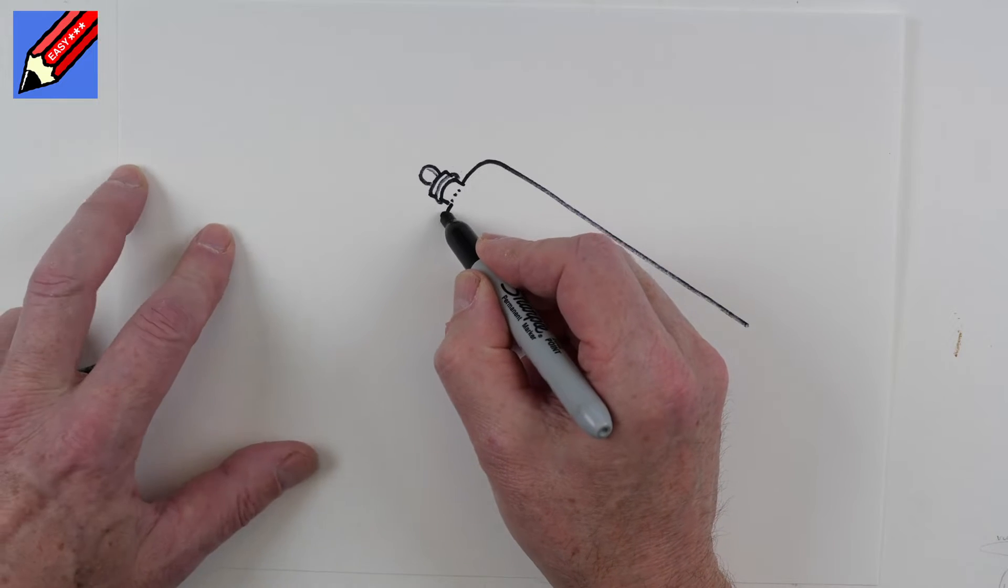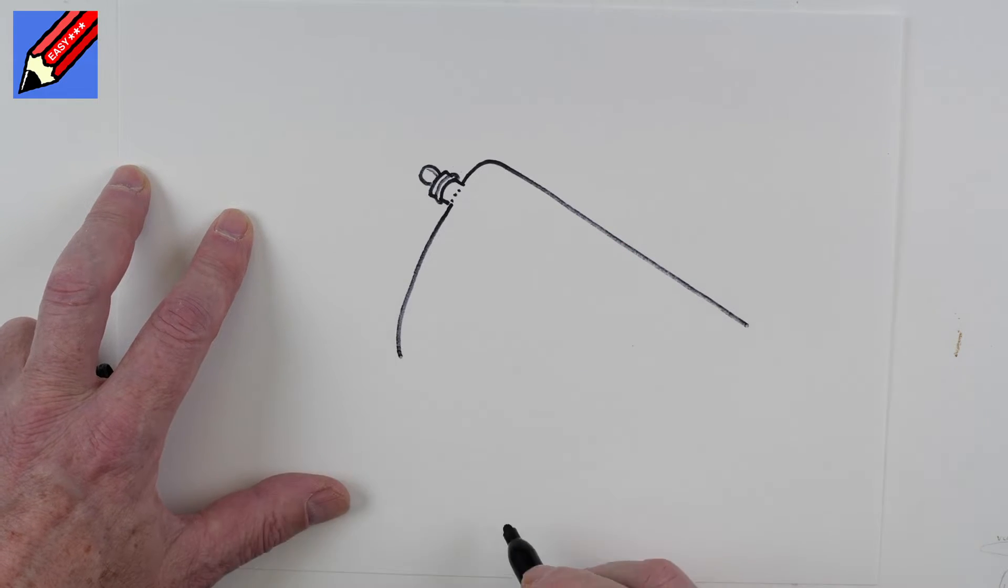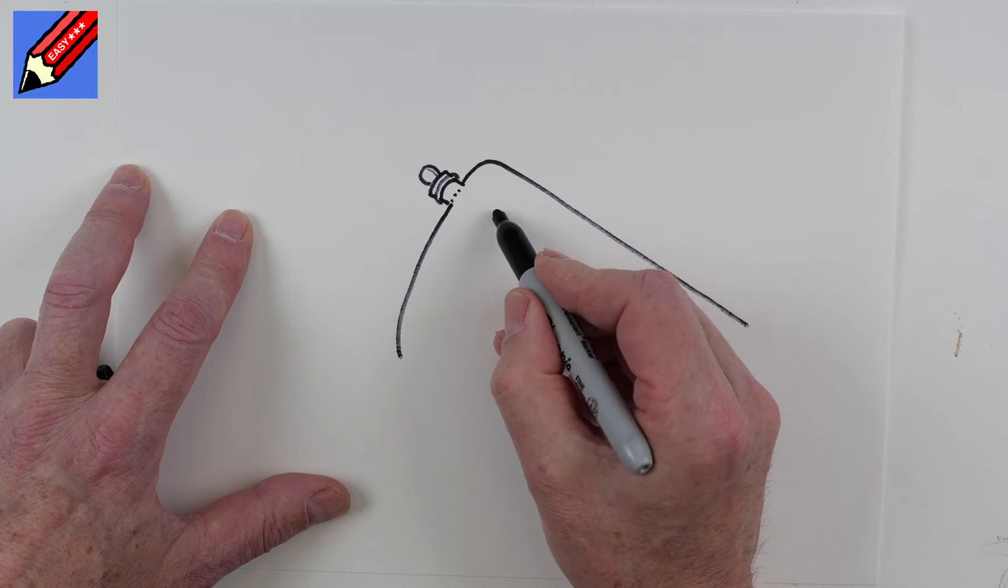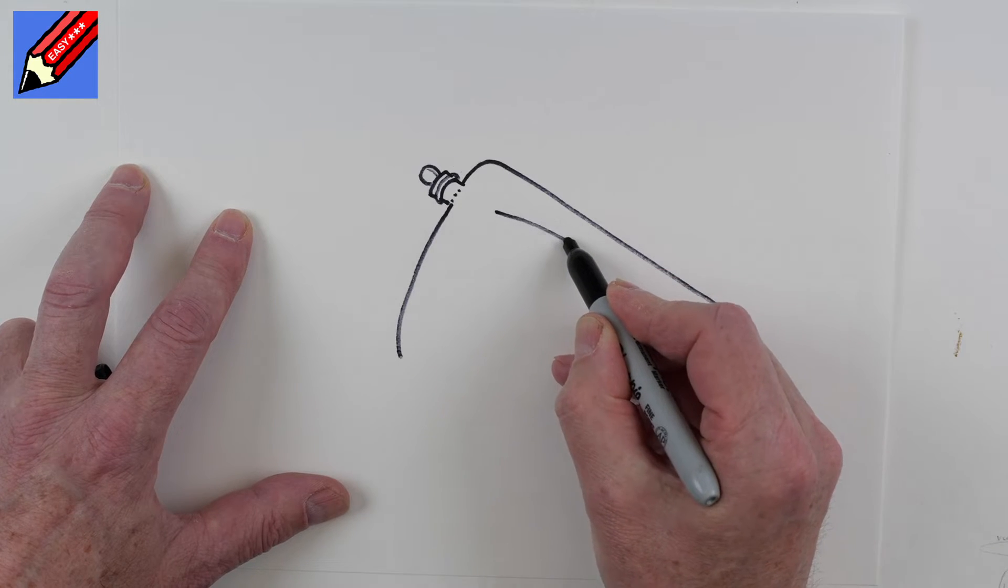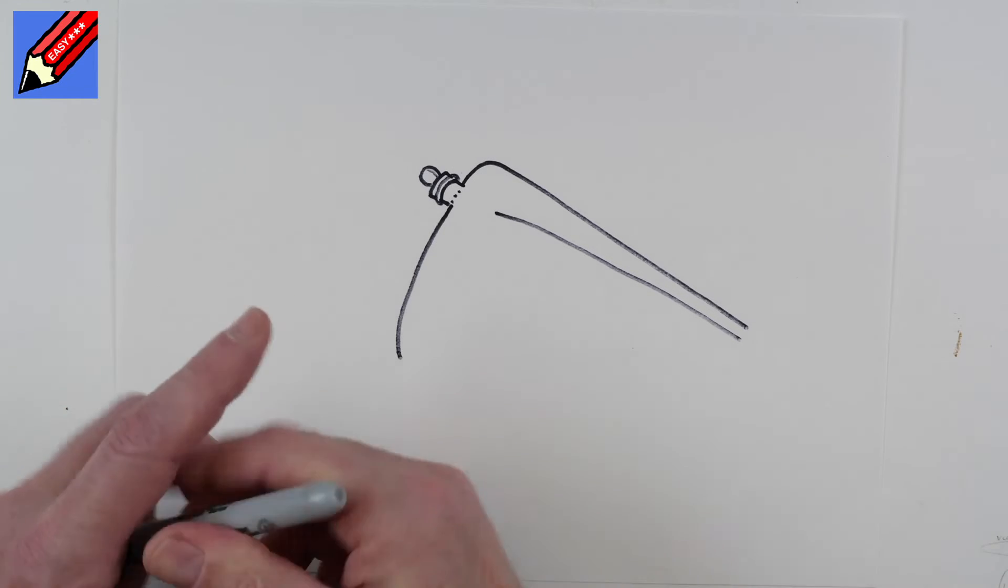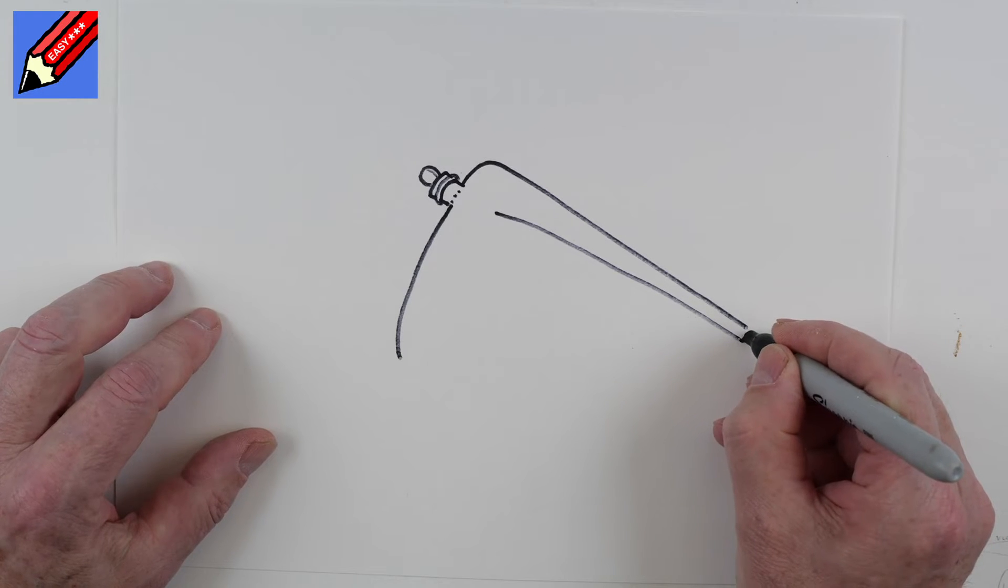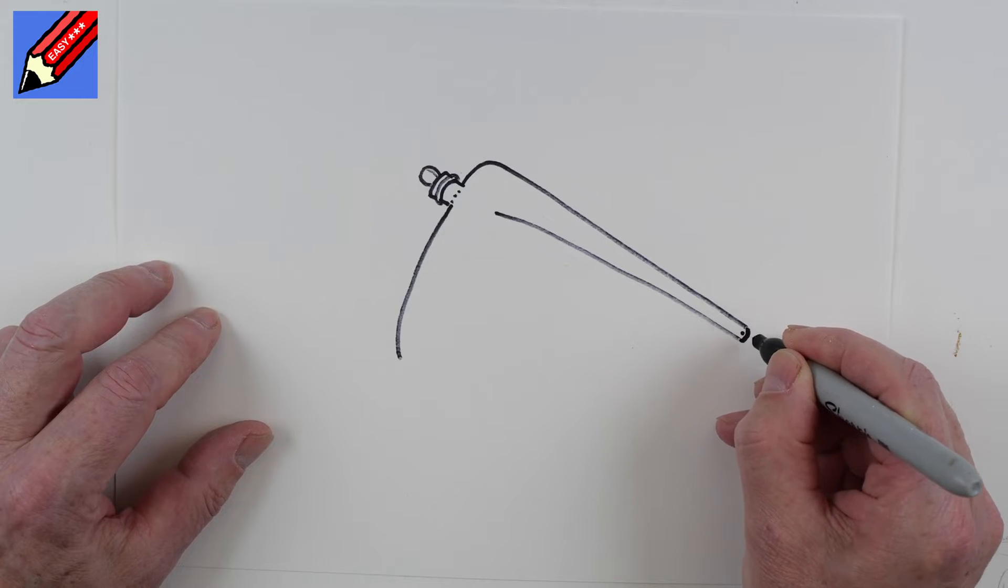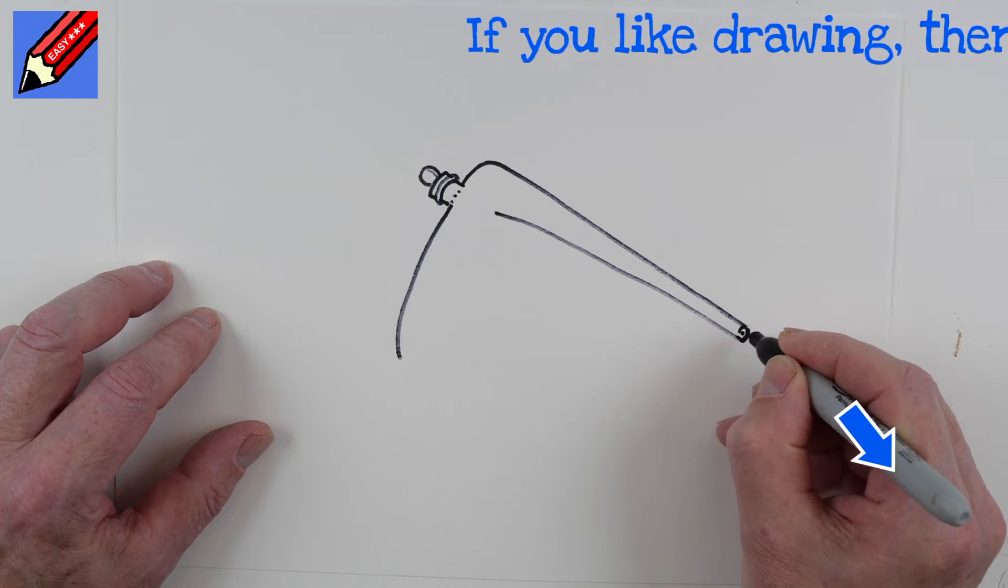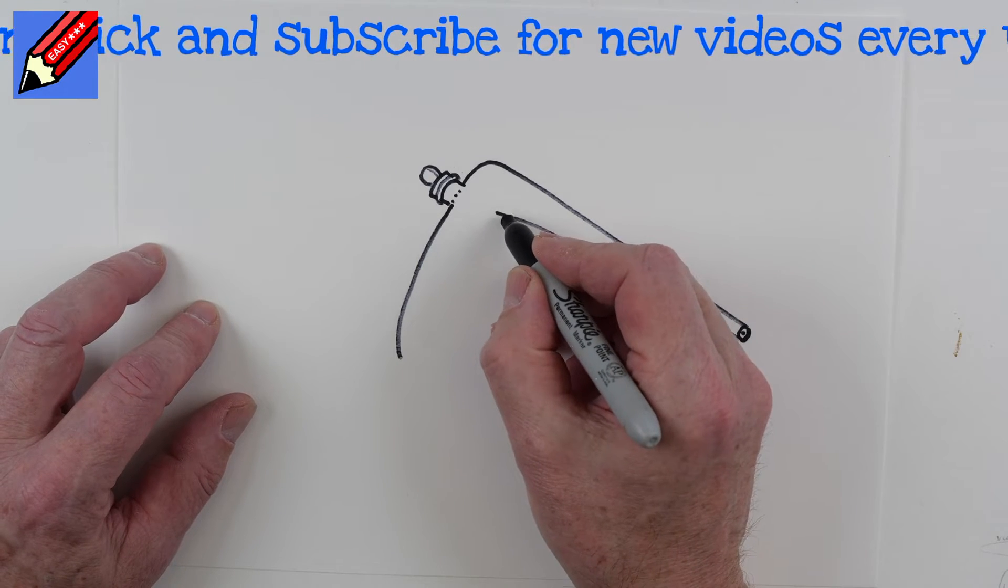From there we want to come down and start coming in a little bit like that. Then here we're going to draw a line coming down to the end. I'm going to change my pen, get something a little bit darker. Then we'll draw a little ellipse at the end with a hole in the middle, and that's where the liquid drips out. So this is